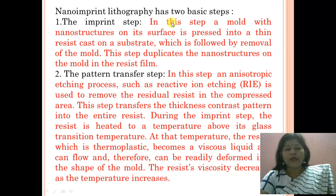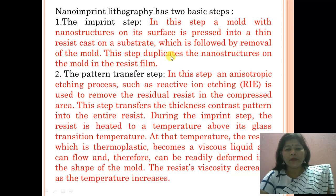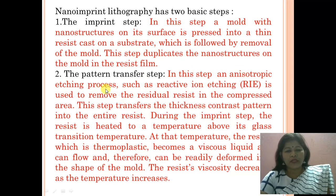In the imprint step, a mold with nano structures on its surface is placed into a thin resist cast on a substrate, followed by removal of the mold. This step duplicates the nano structures from the mold in the resist film. In the pattern transfer step, an anisotropic etching process — also called reactive ion etching — is used to remove the residual resist in the compressed area, transferring the thickness contrast pattern into the entire resist.